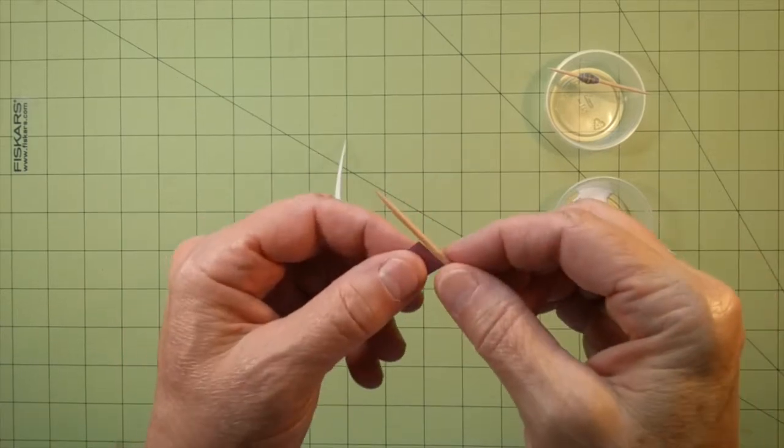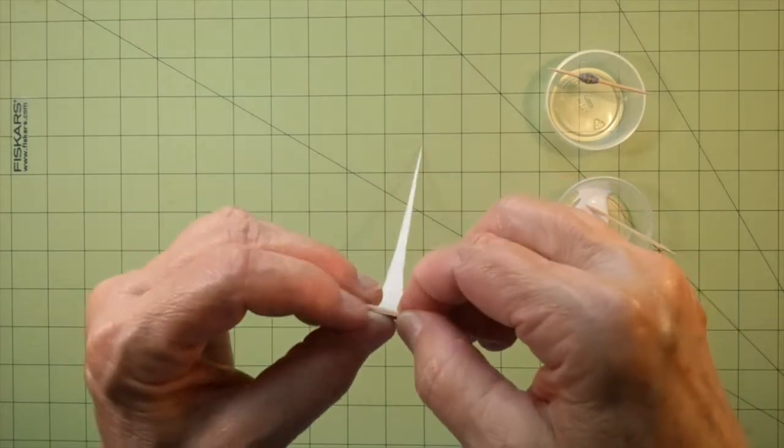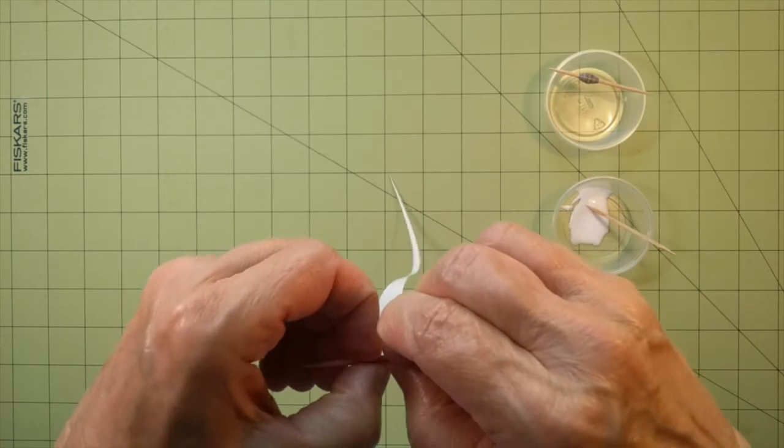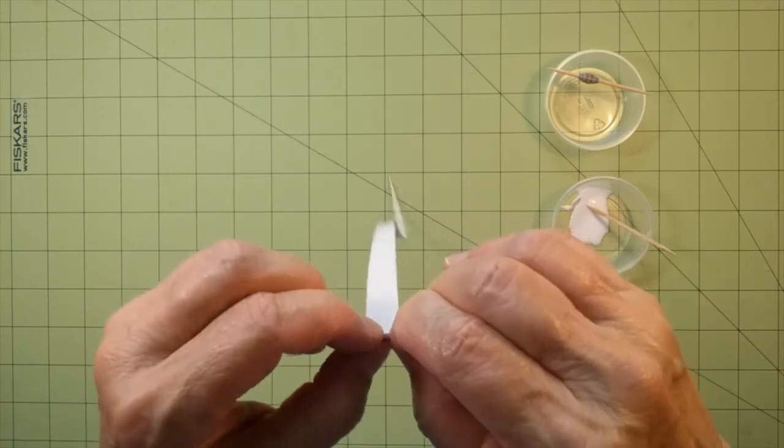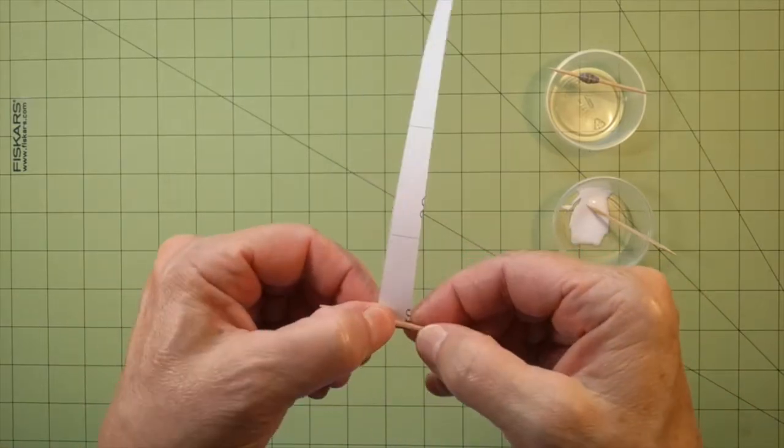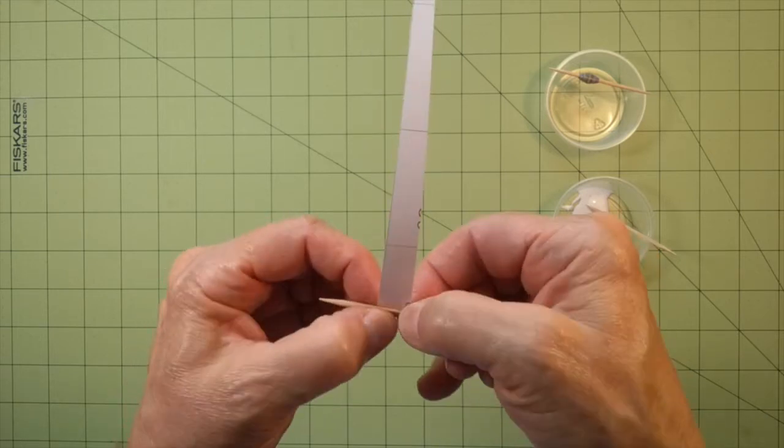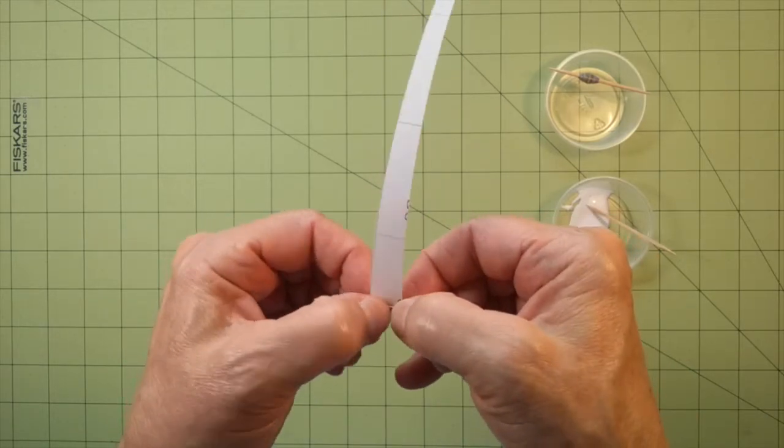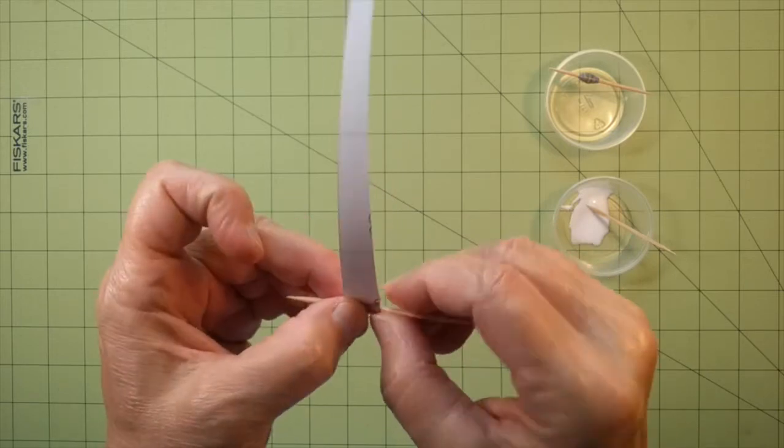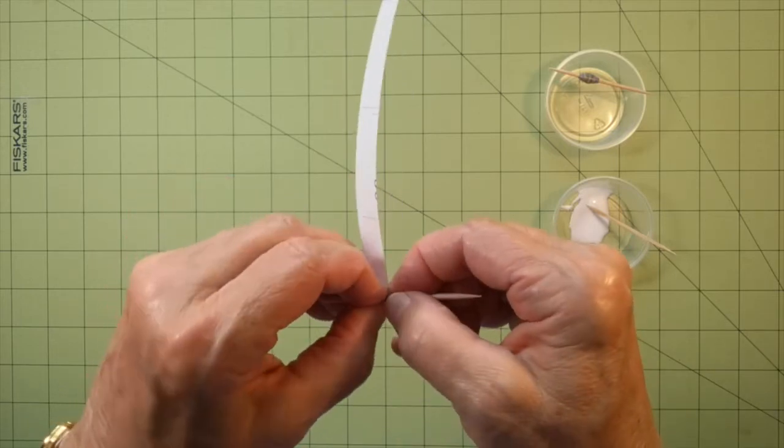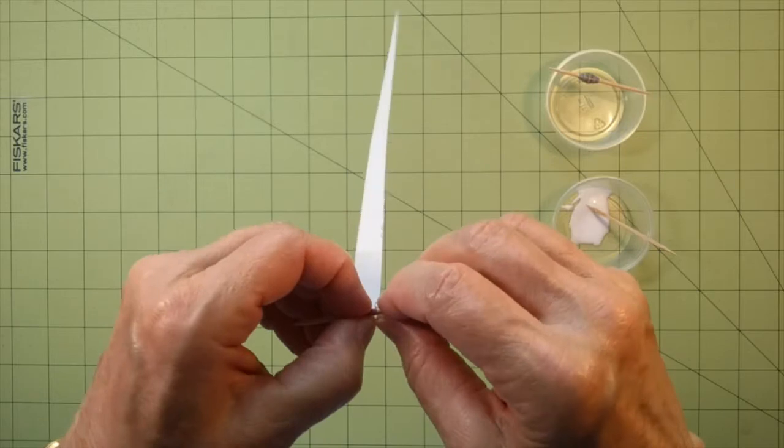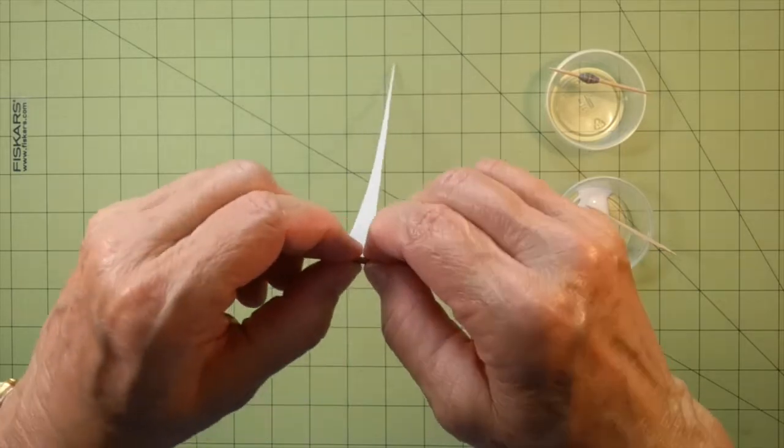So to start your bead, you're going to crimp it around your toothpick or your skewer or whatever you're using. I'm using a toothpick because I want the hole to be fairly small. Just crimp it around there and tuck it under there and roll. This is the hardest part, getting it started.